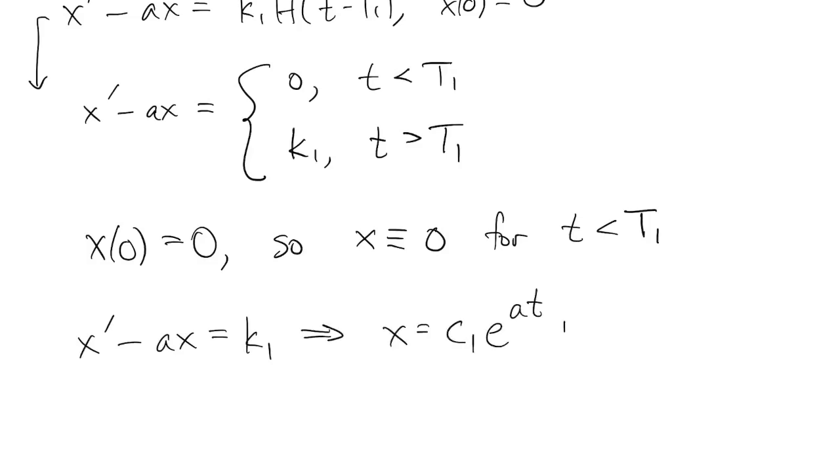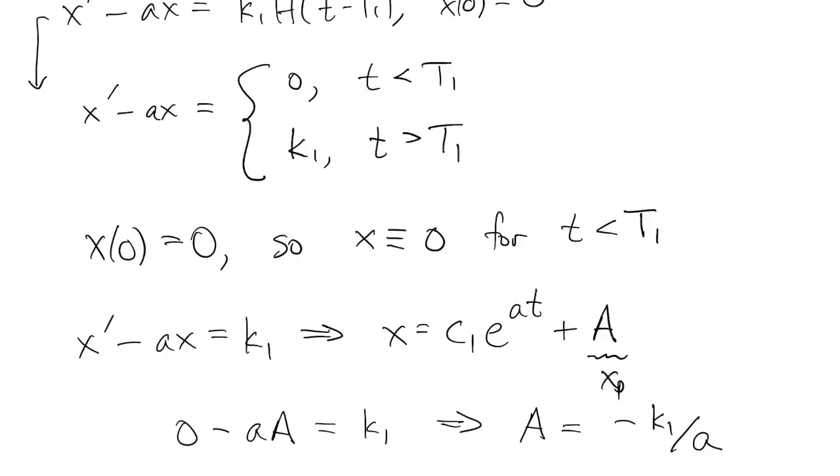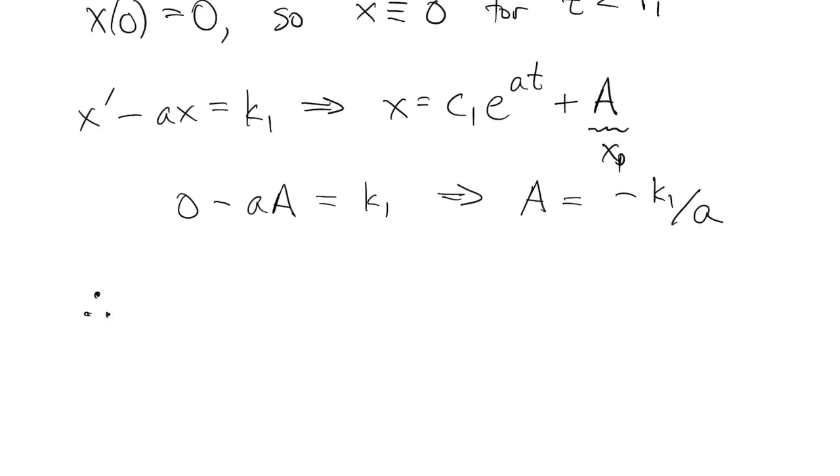After that time, we've got a constant forcing. So the solution has the homogeneous part, and a particular solution, which in this case is just an unknown constant. Put in the particular solution, and we find out that the constant has to be negative k1 over little a. So the solution to this subproblem has to be c1 times e to the at minus k1 over a. Now we use the initial condition at time t1 for this part of the solution. So we know the solution is 0 at t1, and that tells us how to find c1.